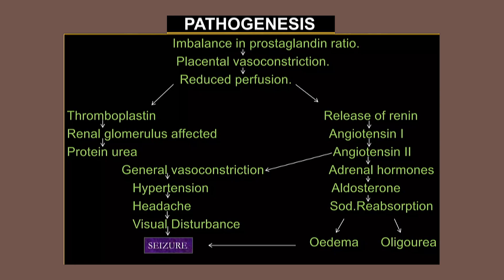Hypertension causes headache, visual disturbances, cerebral arrhythmias, and cerebral irritation, finally leading to seizure and coma. At the same time, when angiotensin 1 is converted to angiotensin 2, adrenal hormones such as aldosterone are released. Increased aldosterone causes sodium reabsorption, leading to edema and oliguria.